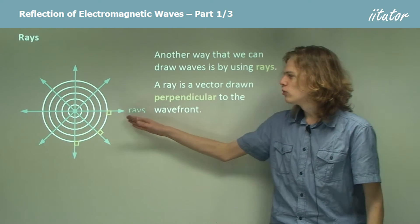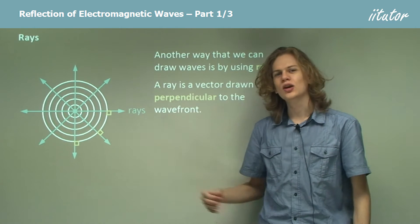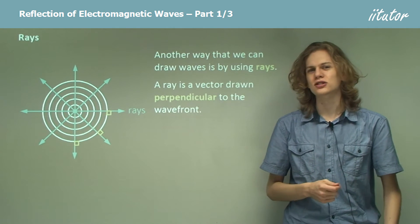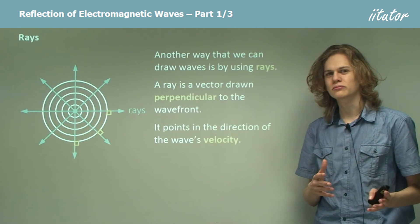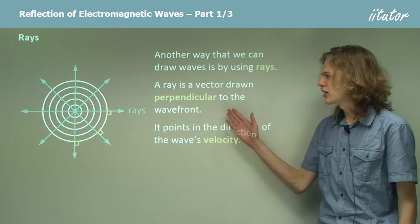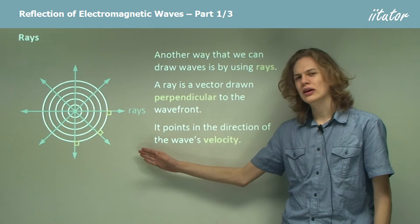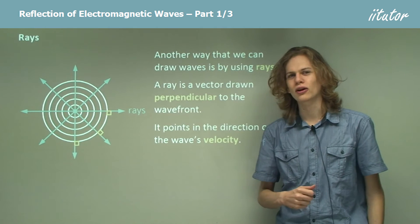We can see that for all of these rays, at any point, they're going to be perpendicular to any wavefronts that they pass through. It will, of course, point in a direction because it is an arrow, it's a vector, and it will point in the direction of the wave's velocity. That's straightforward enough.